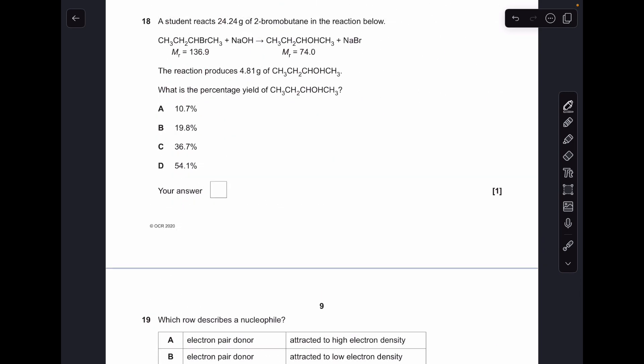Number eighteen: I always do percentage yield using the moles method, so that's the way I'm going to do this one. The moles of 2-bromobutane being used is 0.177. If we look at the ratio, we should be able to make the same number of moles of product. Now for the actual moles of product, it's coming out at 0.065, so the percentage yield is the actual over the theoretical moles times 100, which comes out at 36.7%, so the answer was C.